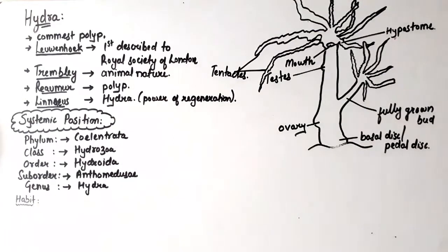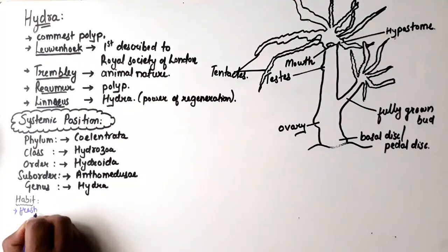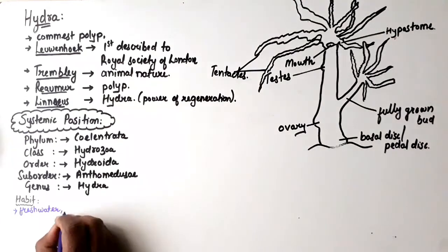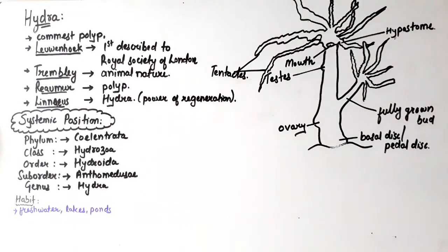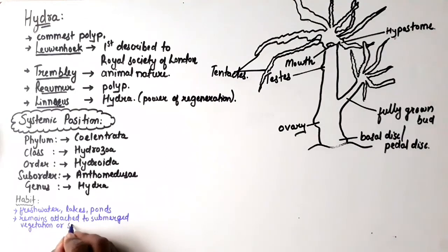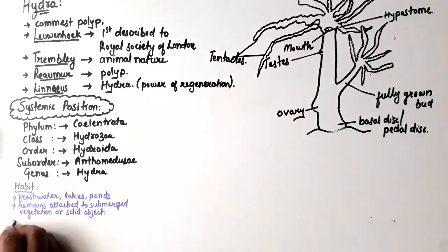Hydra is found in freshwater ponds, pools, lakes, streams, and ditches. Usually, they remain attached to submerged vegetation or any solid object.